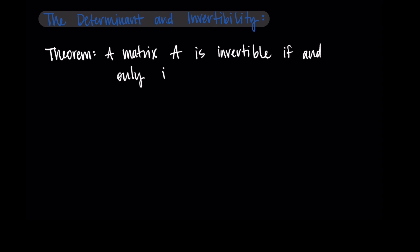So I will give us the theorem and then unpack what it means and then we'll do a related example. So our theorem states that a matrix A is invertible if and only if the determinant of A is not equal to zero.